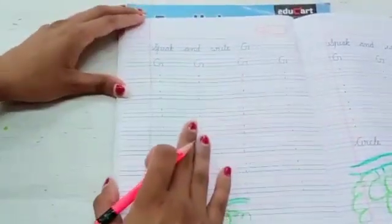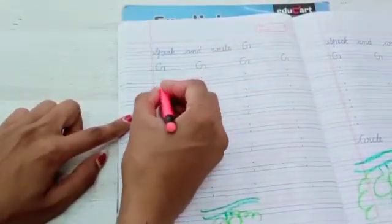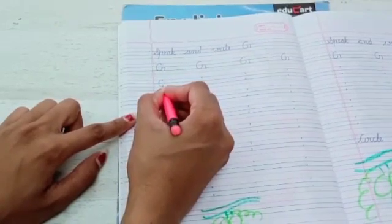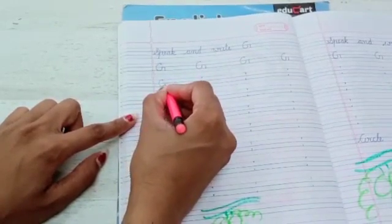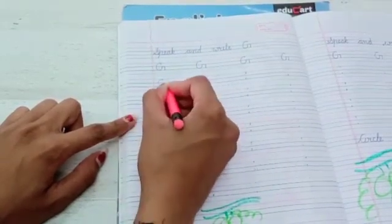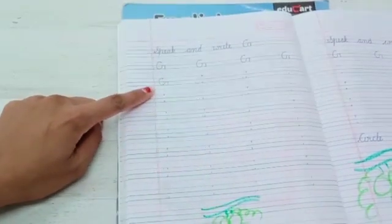Aaj hum banayenge letter G. So point your pencil here. And make left half circle. Means C for cat. Goes up. Touch the black line. Sleeping line and standing line. This is the letter G.